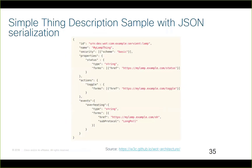We will see an example serialized in JSON. We see first the ID (the URI), then the name, and the security is 'basic'. Then the properties — here is one: 'status'. Then the actions: 'toggle'. And then the events: 'overheating'. This kind of structure has this description. By default it is serialized in JSON, but future serializations will likely be accepted in future work.